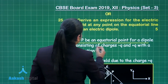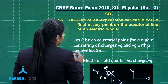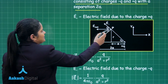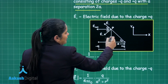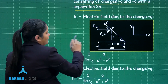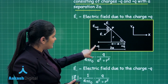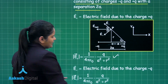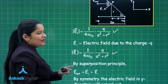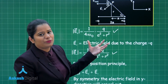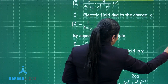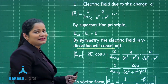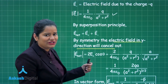Let P be an equatorial point for a dipole consisting of charges −Q and +Q with separation 2A. In the figure, −Q and +Q are charges separated by distance 2A, and point P is on the equatorial line at distance R from the centre of the dipole. We calculate the electric field at point P due to the positive as well as the negative charge. The expression for the electric field due to the positive charge and the expression due to the negative charge are written. By the superposition principle, the electric field at P is the vector sum of these two. Due to symmetry, the y-direction components cancel, and the net electric field is only in the negative x direction.